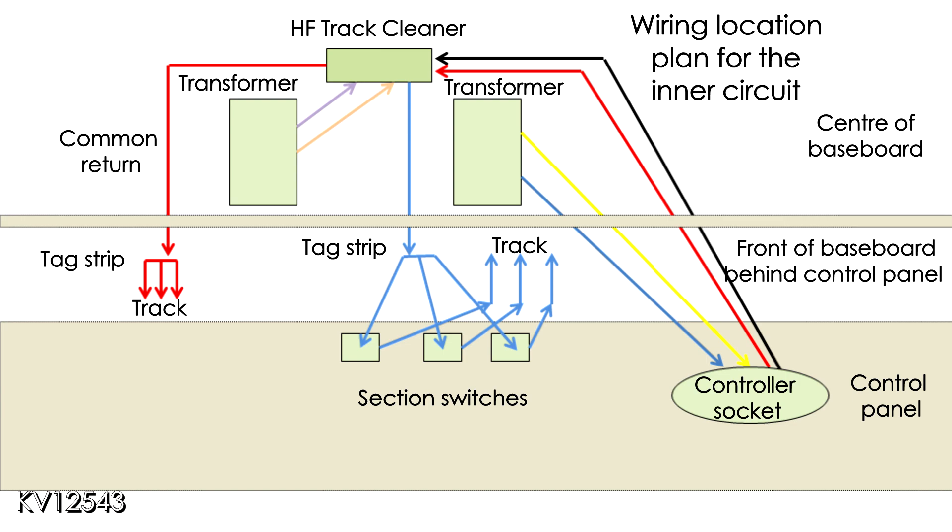The wires from the transformer first have to be routed to the socket on the control panel and the return wires from the socket back to the HF track cleaner in the center of the baseboard. Output wires from the HF track cleaner then have to be routed back to the tag strips at the front of the board. From there common return wires go to the track section and the other section wires to the section switches. Finally the track section wires are fed to the track sections.